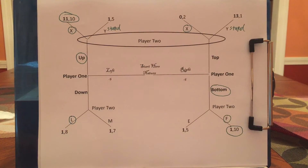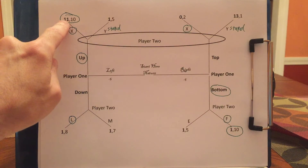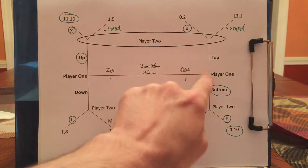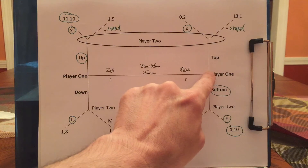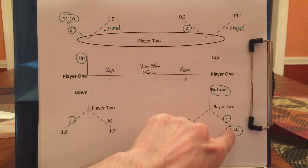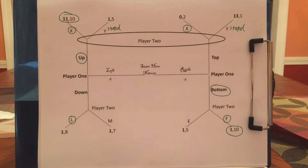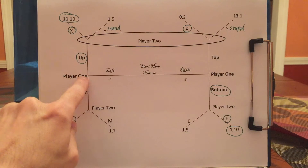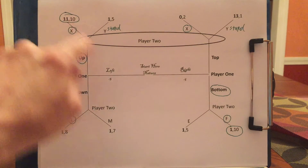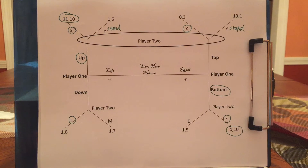Now it becomes easy to figure out what player 1 should do. If nature makes player 1 a lefty, he'll say: up leads to X, which leads to 11; down leads to L, which leads to 1. I'm going with up if I'm a lefty. If nature made me a righty, top leads to X, which leads to 0; bottom leads to F, which leads to 1 — which is better. So player 1 will play bottom. In this game, if nature picks left we end up here, and if nature picks right we end up here. So we end up here with probability 0.5, and we end up down here with also probability 0.5.